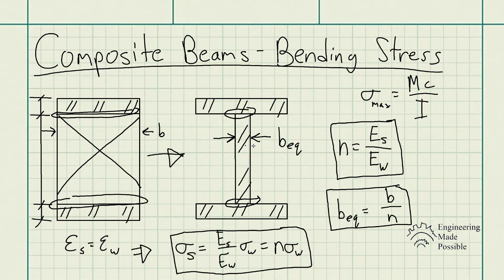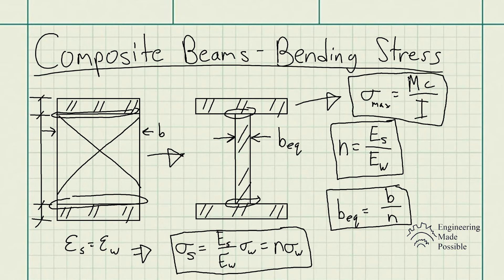Once you do the transformation, the equivalent beam is homogeneous and you can apply the bending stress formula, since it only applies to homogeneous materials. We've transformed it from a composite beam to a homogeneous beam of all the same material, with just some ratio calculations needed. Let's go ahead and do a problem.